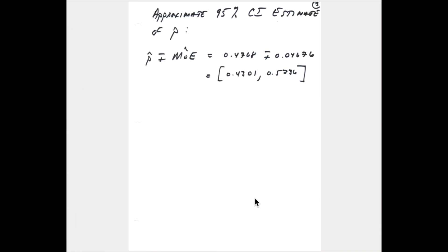Combining the point estimate with the approximate margin of error gives the approximate 95% confidence interval estimate of p, ranging from 0.4301 up to 0.5236. We are approximately 95% confident that the proportion of people who rent their homes in this city is between 0.4301 and 0.5236—or equivalently, between 43.01% and 52.36%.